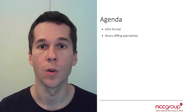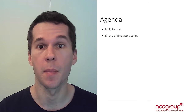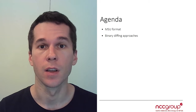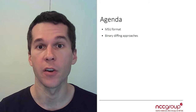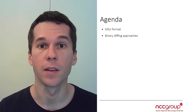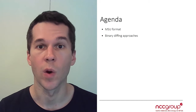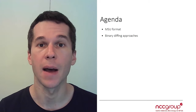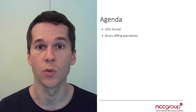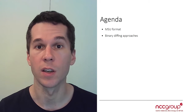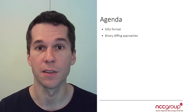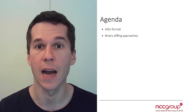The general approach when you want to explore a vulnerability in patched software is to do what we call binary diffing or patch diffing. The idea is you compare the version of the binary before the patch and after the patch. We are going to go over the MSU format, which is the format used by Microsoft to embed patches, then talk about the different methods used for patch diffing and their drawbacks and advantages.